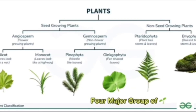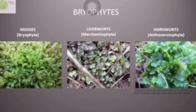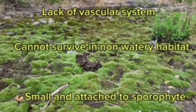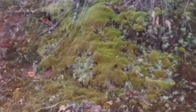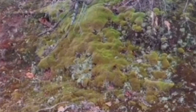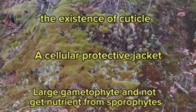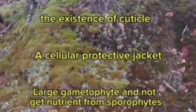Today we will learn about four major groups of plants. The first one is bryophytes. They are called lower-level plants because they lack a vascular system, cannot survive in non-watery habitats and are small. But they can adapt through the existence of a cuticle, a protective cellular jacket, and they have a large gametophyte.